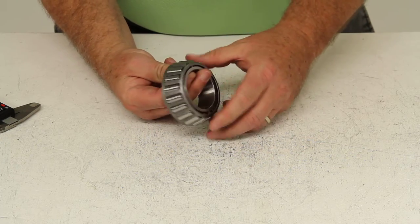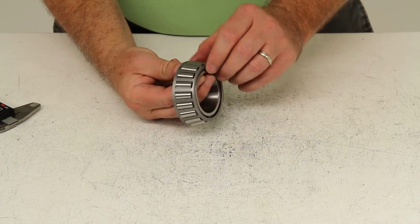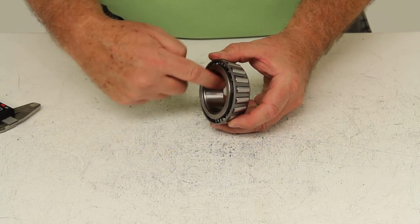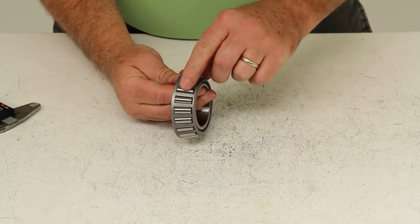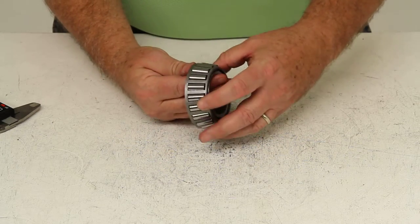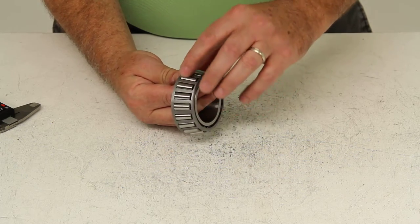Now this bearing will consist of three components: the inner ring or the comb, the roller bearings, and then the bearings are retained in a roller retainer or a cage.